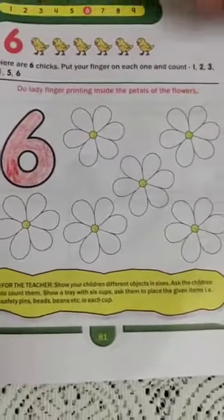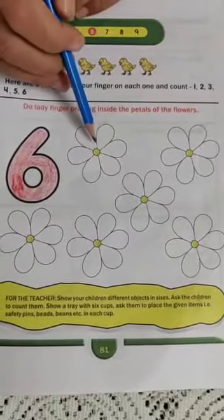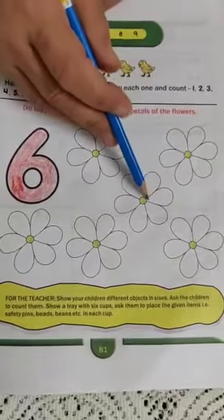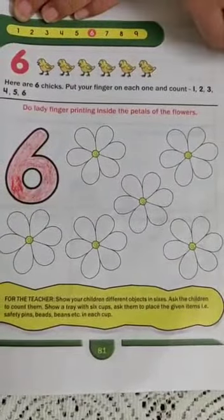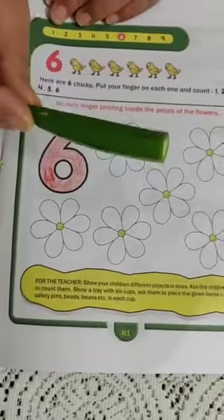There are 6 flowers. 1, 2, 3, 4, 5, 6 flowers. And what is in my hand student?